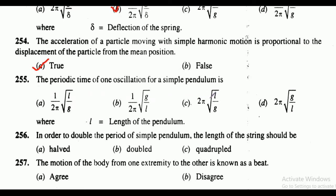Question 255: the periodic time of one oscillation for a simple pendulum. The options are shown, where L equals length of the pendulum. The correct answer is option C, that is 2 pi under root of L upon g.